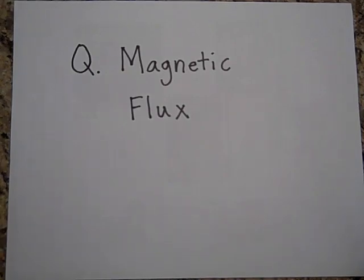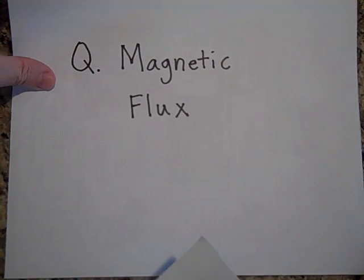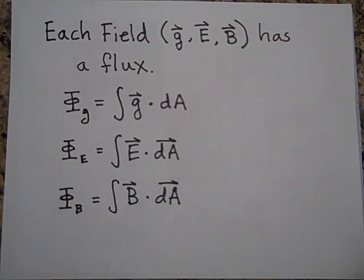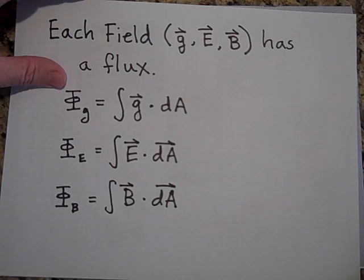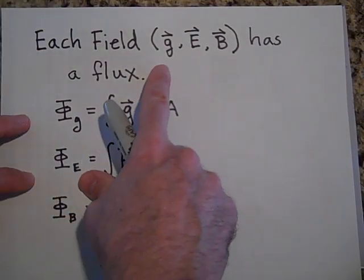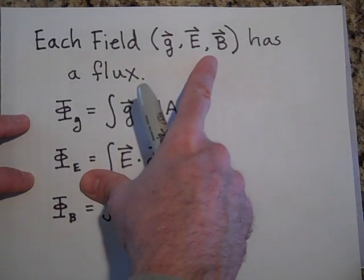Okay, I'd like to tell you about magnetic flux. It turns out that every field that we've studied has a flux attached to it. So gravitation—there are the three fields we've studied: the gravitational field, the electric field, and the magnetic field.